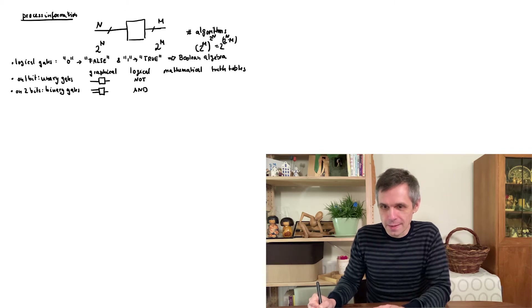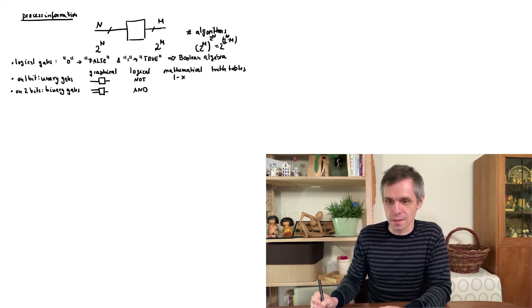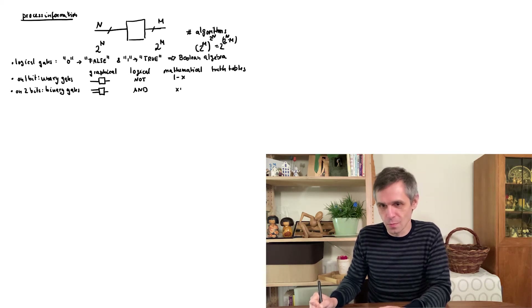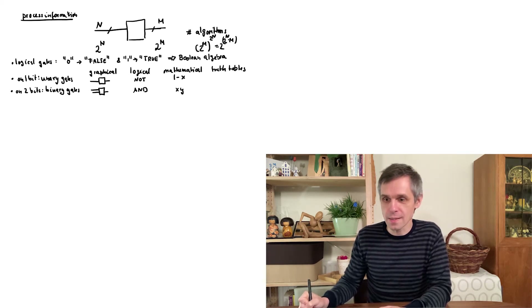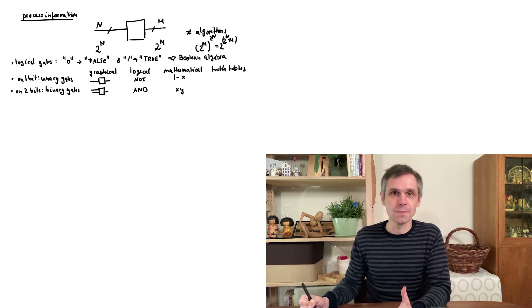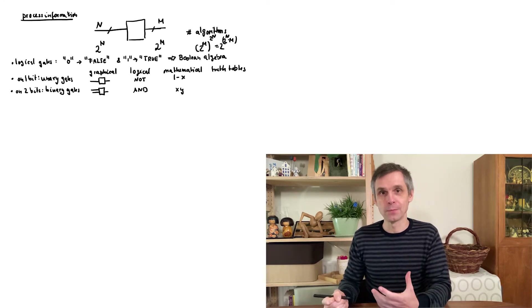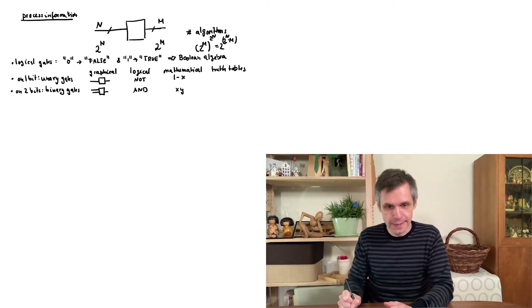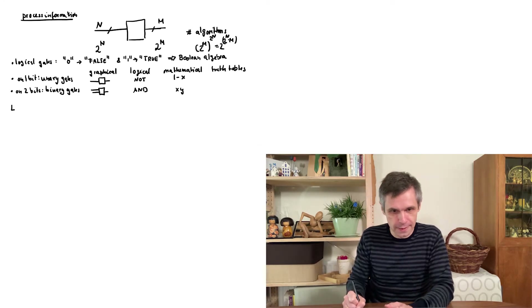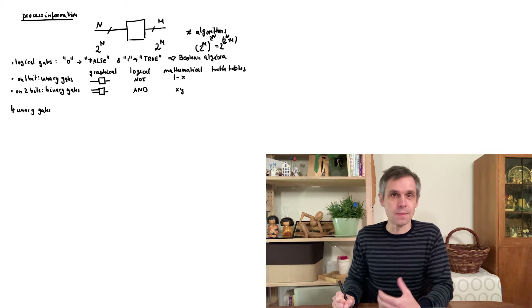Mathematically we will have operations on integers. The tables make all of this very concrete by specifying which outputs you obtain for the different inputs. When we apply this to the unary gates, we find that there are exactly four different unary gates, and we can specify them all by the corresponding table.